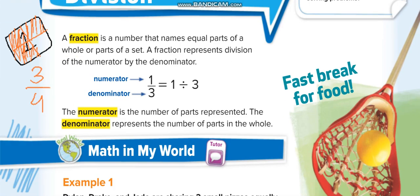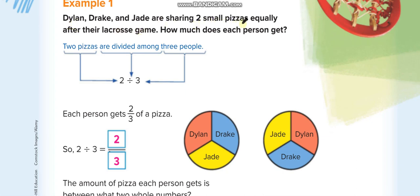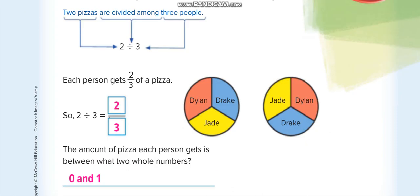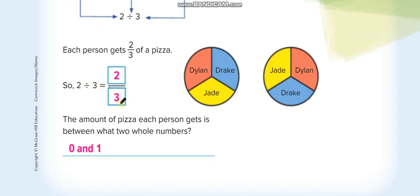First example: Del, Crack, and Jade are sharing two small pizzas equally after their lacrosse game. How much does each person get? There are three people sharing two pizzas. You cut each pizza into three parts; each person gets one part from each pizza. The denominator is three and the numerator is two, so each person gets two-thirds. This number lies between zero and one — each person gets some but not a whole pizza.